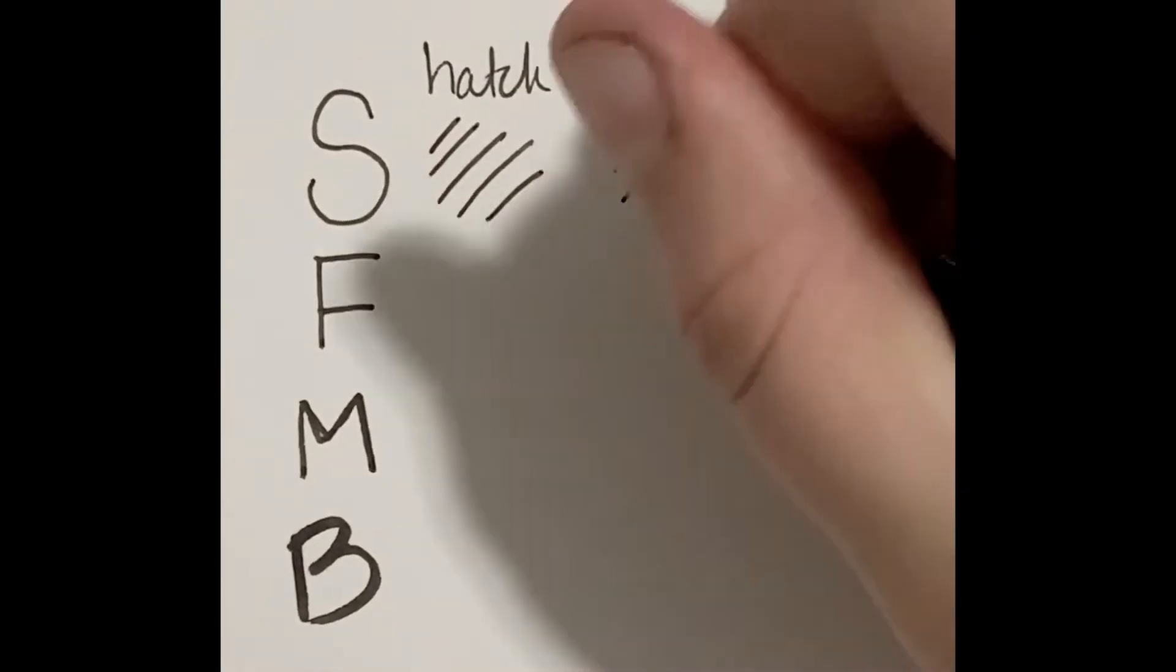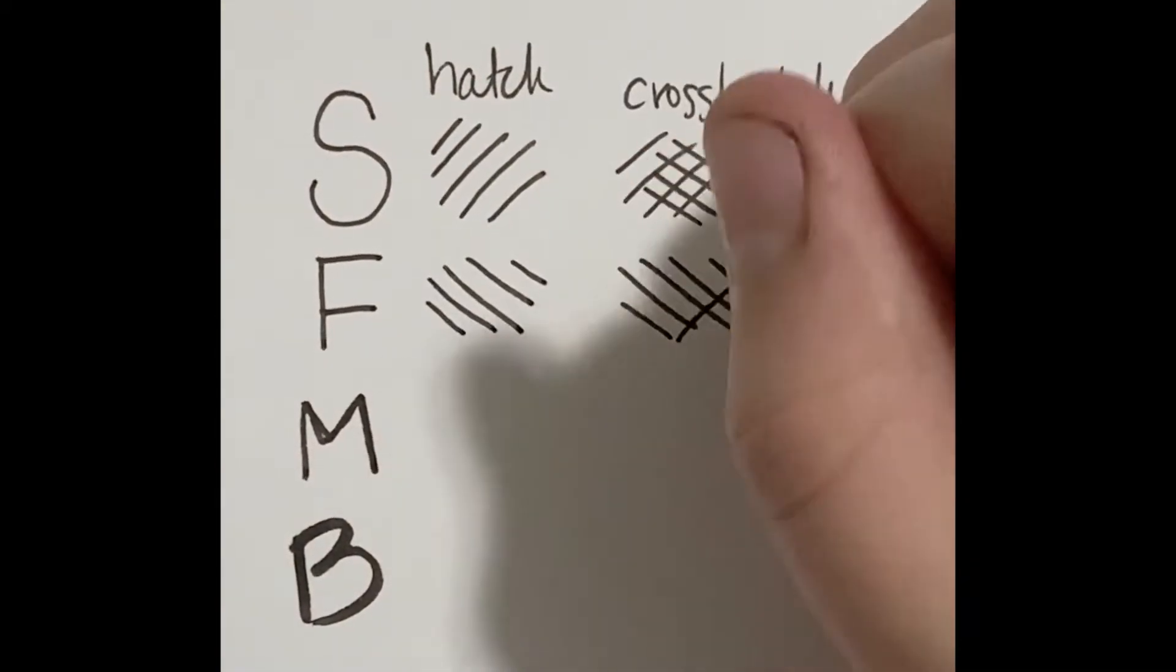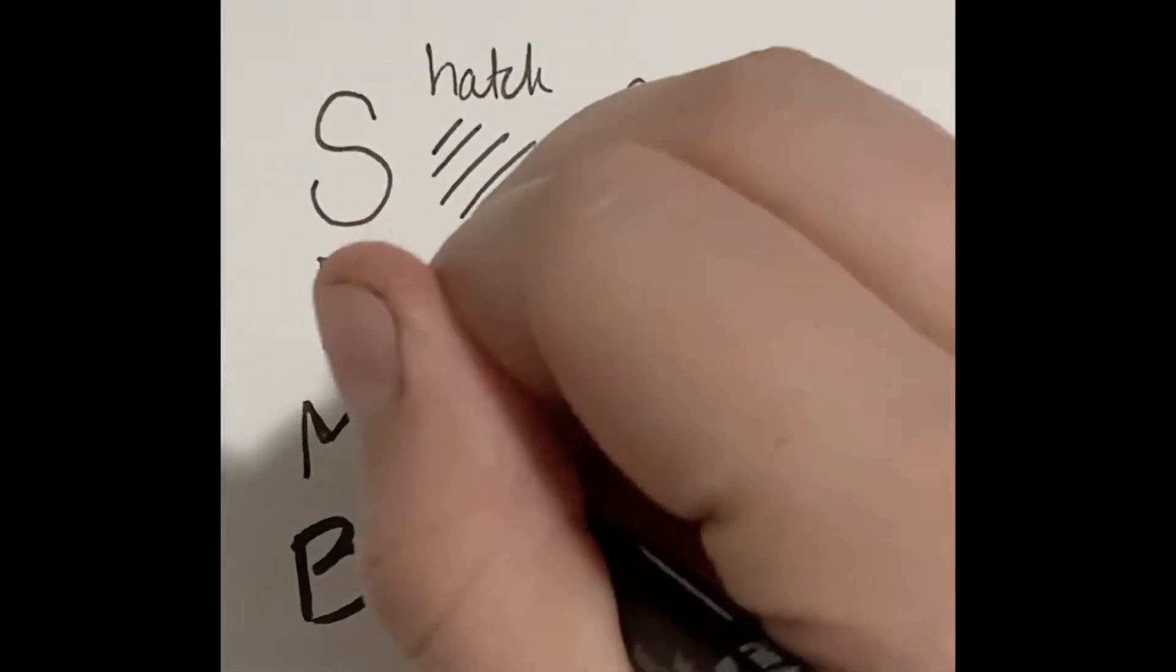As usual, we're going to start by covering different materials, showing hatching and cross-hatching. This is a Faber-Castell pen - sorry if I'm mispronouncing it - F-A-B-E-R Castell.